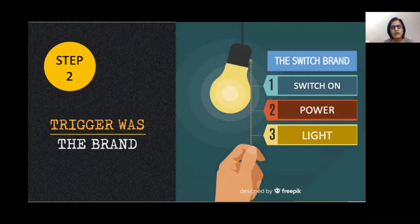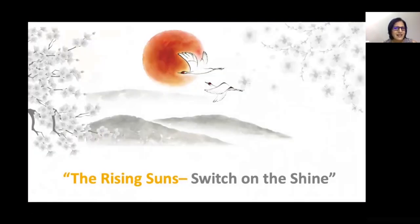We also saw how we arrived at the main theme using word mapping. We got the words 'switch on,' 'power,' and 'light.' The central theme was called 'The Rising Suns — Switch On The Shine,' because it was all about light, power, and ultimately switching on the inner shine of the employees.